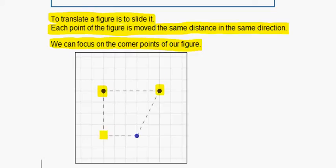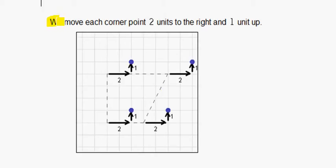So here are our corner points. We move each corner point two units to the right and one unit up.